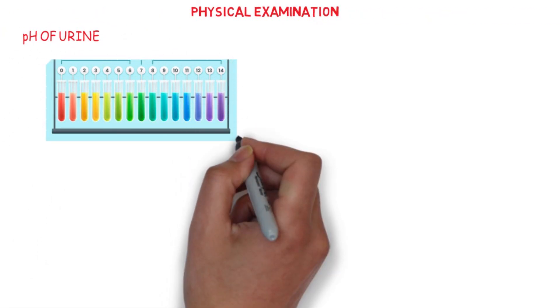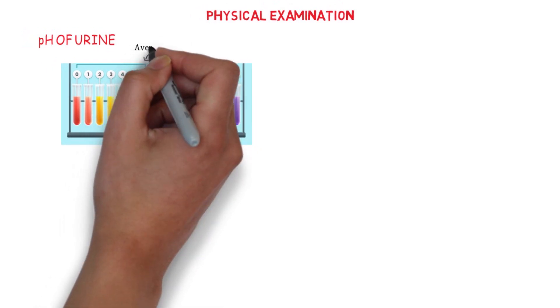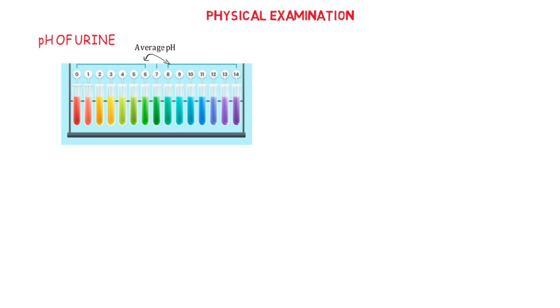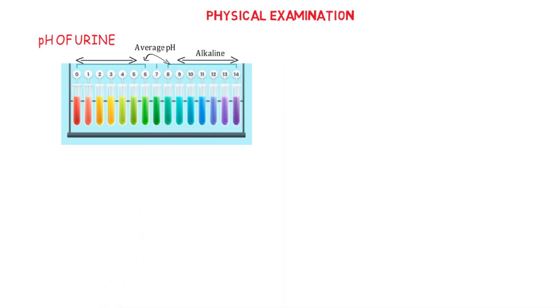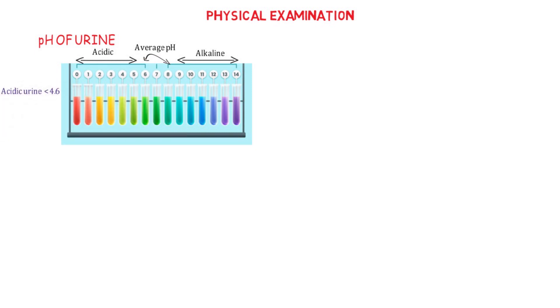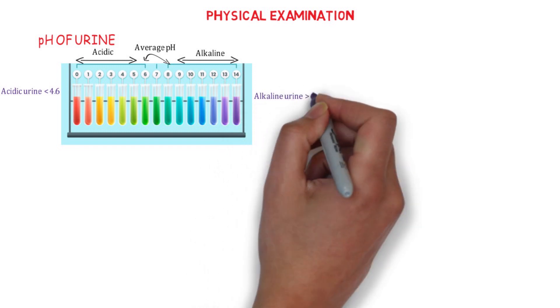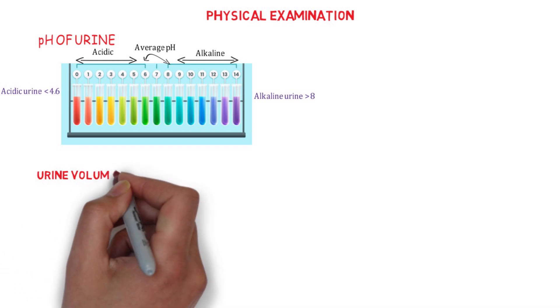The pH of the urine is also examined during physical examination. The average urine pH of a normal human is between 6 and 8 on the pH scale, and it measures the acidity or alkalinity of the urine. An acidic urine is below 4.6, while an alkaline urine is above 8 on the pH scale.